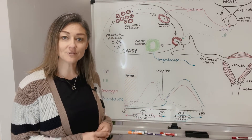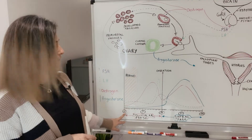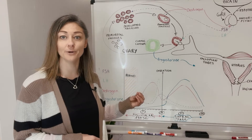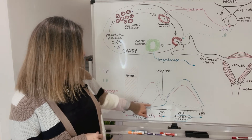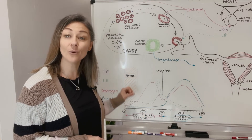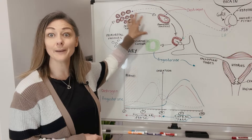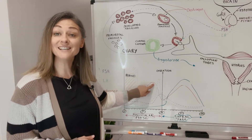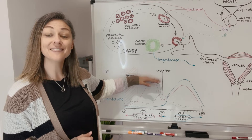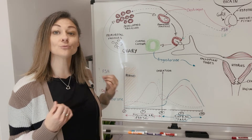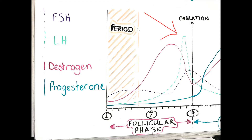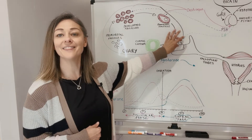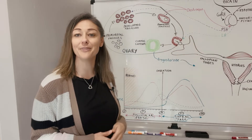The first phase is the follicular phase, which goes from day one of your period until ovulation. During this phase, the brain sends out follicle stimulating hormone — FSH, represented by the purple line here — which stimulates the follicles to grow and mature. As they do, they produce estrogen. Estrogen levels continue to rise, and when they reach their peak they signal back to the brain, causing the release of luteinizing hormone — shown here by the light blue line — which triggers ovulation and the egg ruptures from the ovary and is collected by the fallopian tubes.